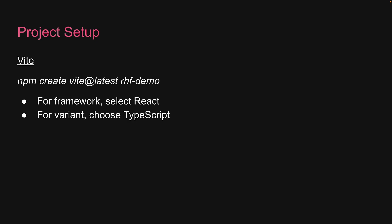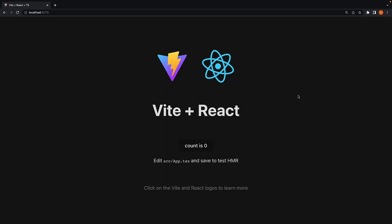That should generate a new project folder. Navigate into the project folder with the command cd rhf-demo and run npm install to install the dependencies. To run the application in development mode, run npm run dev. You should see the React app up and running on localhost port 5173.